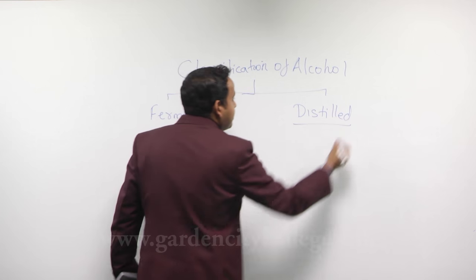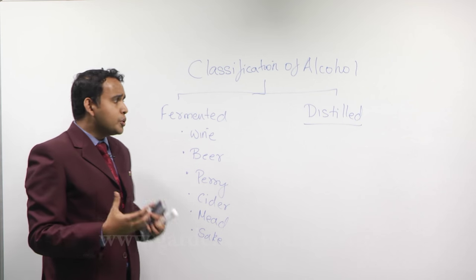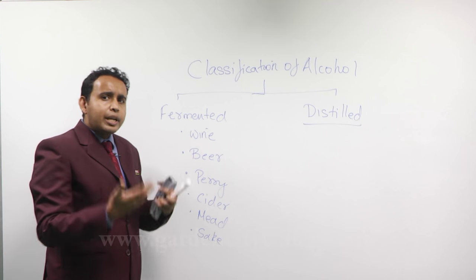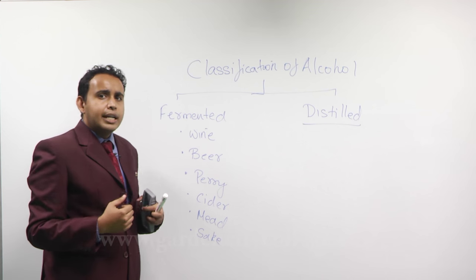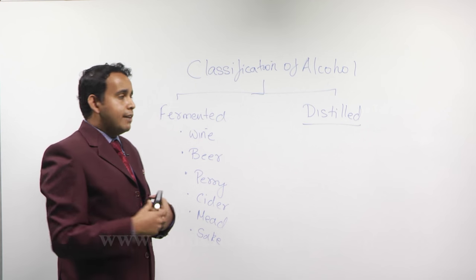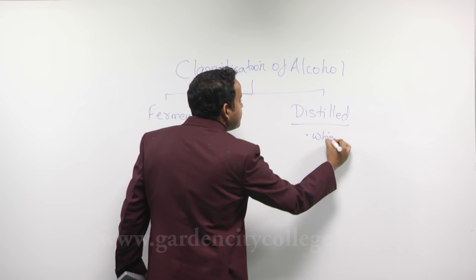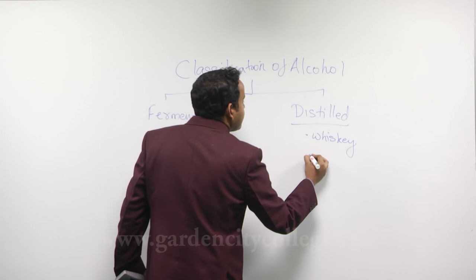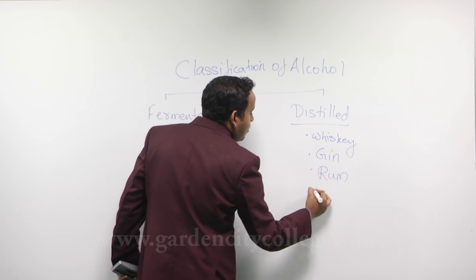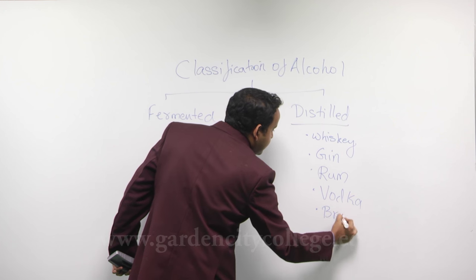When we talk about distilled beverages, distilled beverages is not a natural process — it is a mechanical process. What you do is you take a fermented beverage and then you heat it, evaporate the alcohol and then condense it. During the condensation process you get pure alcohol and then you flavor it. The distilled beverages, for example, are whiskey, gin, rum, vodka, brandy and tequila.